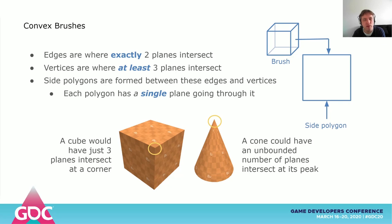In the case of our convex brushes, edges are where two planes intersect. Vertices are where at least three planes intersect. Take a cube for example — each corner only has three sides touching it, which is the most common case. However, when you have a cone as a shape, it could have any number of planes intersecting at the vertex that lies at its peak. With these edges and vertices, we define polygons. These polygons are sides of our brushes. Each side polygon only has a single plane going through it.